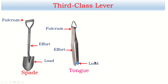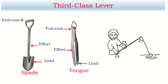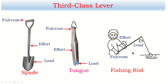Next, the fishing rod: we hold the rod at one end, which acts as the fulcrum. We apply effort in the middle, and the weight of the fish is the load. Since effort is acting in between the fulcrum and the load, the fishing rod is a third class lever.